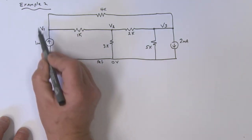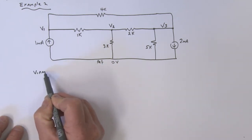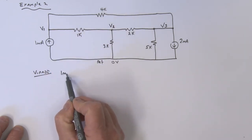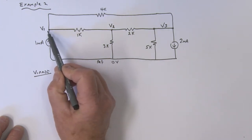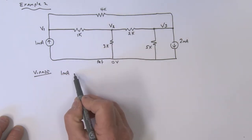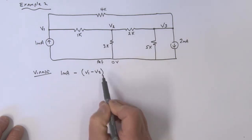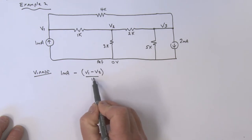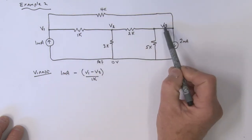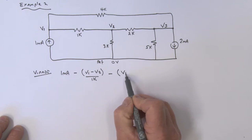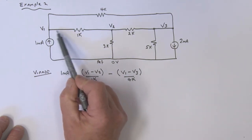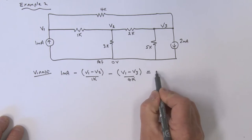Now we're going to sum the currents at each of these nodes. At the V1 node, we've got 1 milliamp going in. Going out: minus (V1 minus V2) divided by 1k, and also minus (V1 minus V3) divided by 4k. All of that equals zero — that's our first node equation.